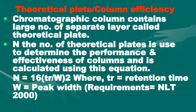Next is theoretical plate or column efficiency. A chromatographic column contains a large number of separate layers called theoretical plates. N, the number of theoretical plates, is used to determine the performance and effectiveness of the column and is calculated using this equation: N = 16 × (tR / W)², where tR is retention time and W is peak width. The theoretical plate count should be not less than 2000.